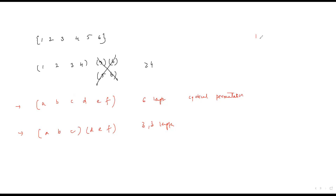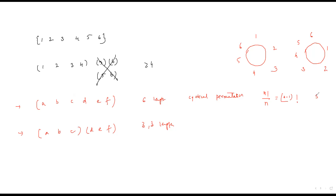For two 3-length cycles: first, choose which 3 elements form the first cycle — that's C(6,3) = 20 ways. The remaining 3 automatically form the second cycle. Then arrange each group cyclically: (3−1)! = 2! = 2 ways for each cycle. So we get 20 × 2 × 2 arrangements.